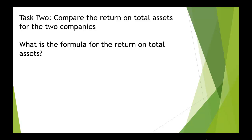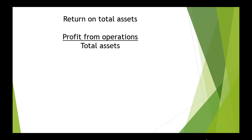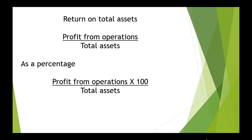Our second task is to compare the return on total assets for the two companies. We're going to need the formula for the return on total assets. The return on total assets is the profit from operations divided by the total assets. As a percentage, you multiply by 100 over 1, and we'll use the percentage again here.